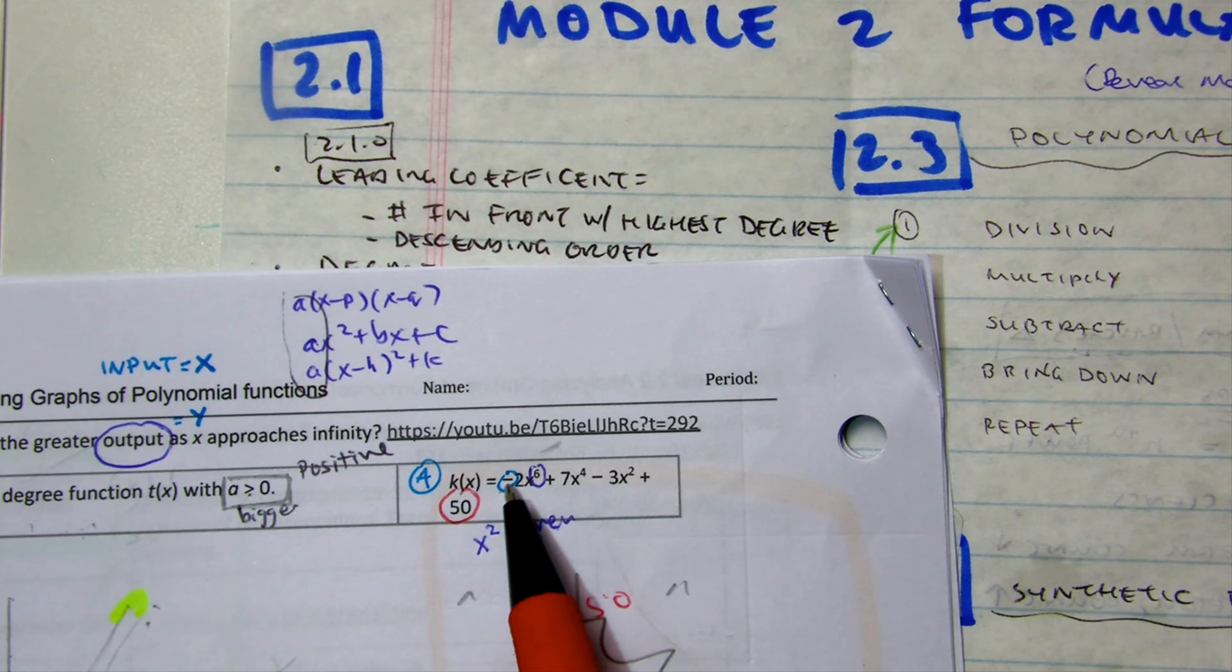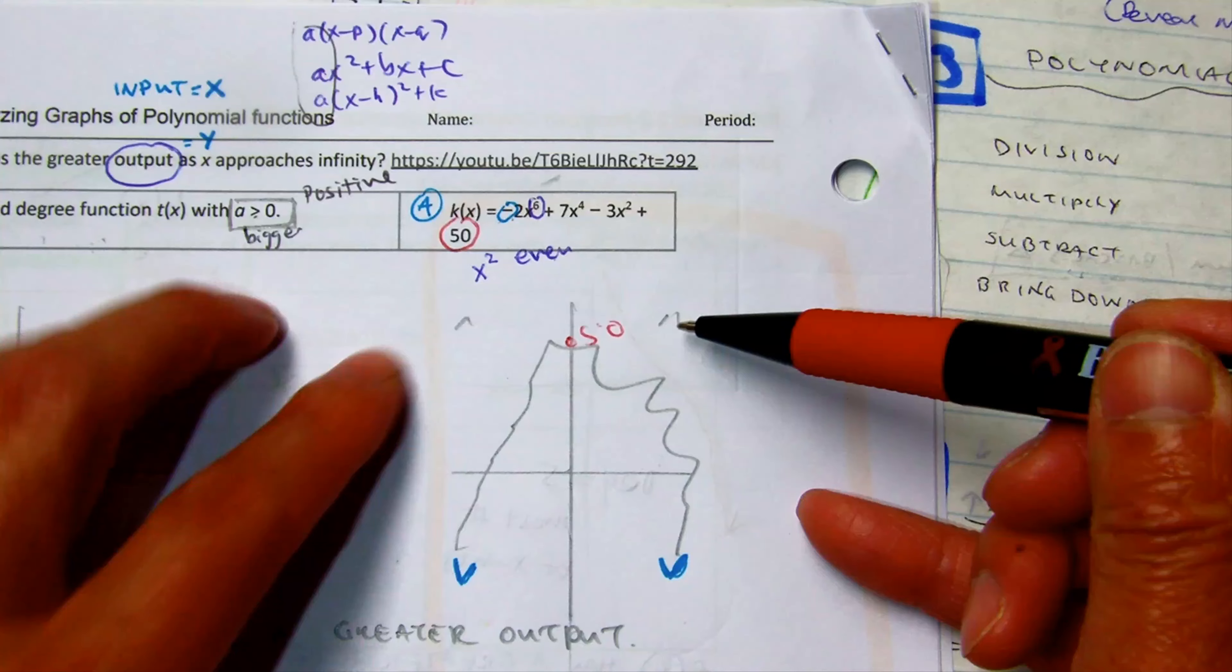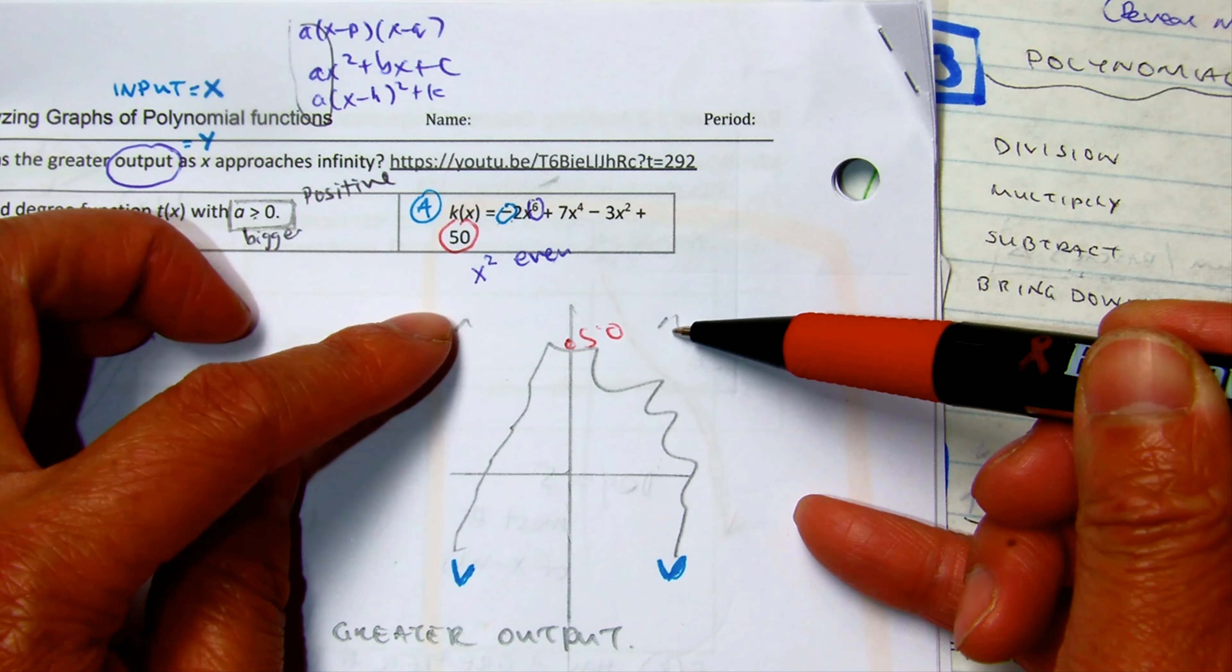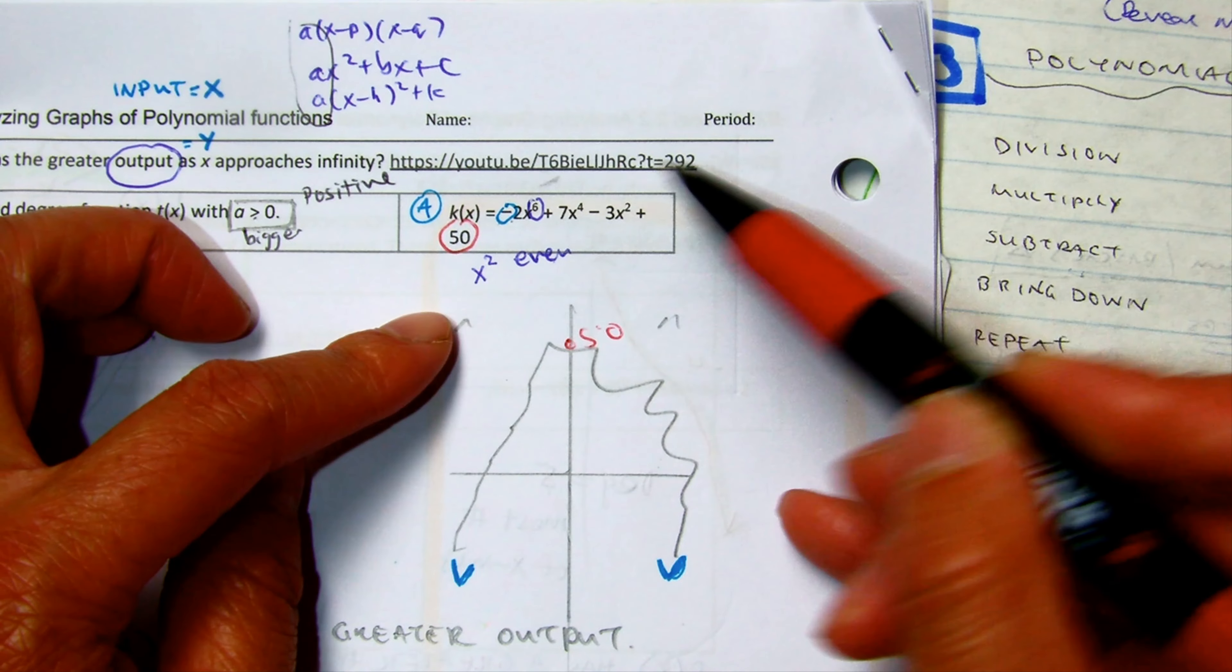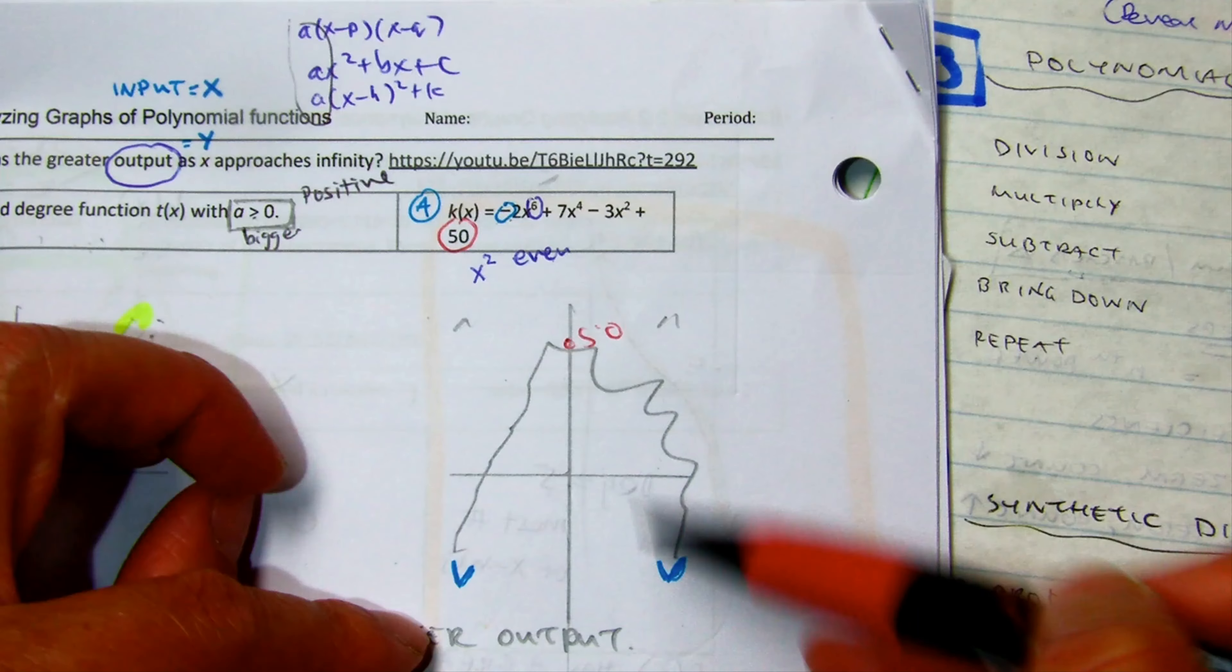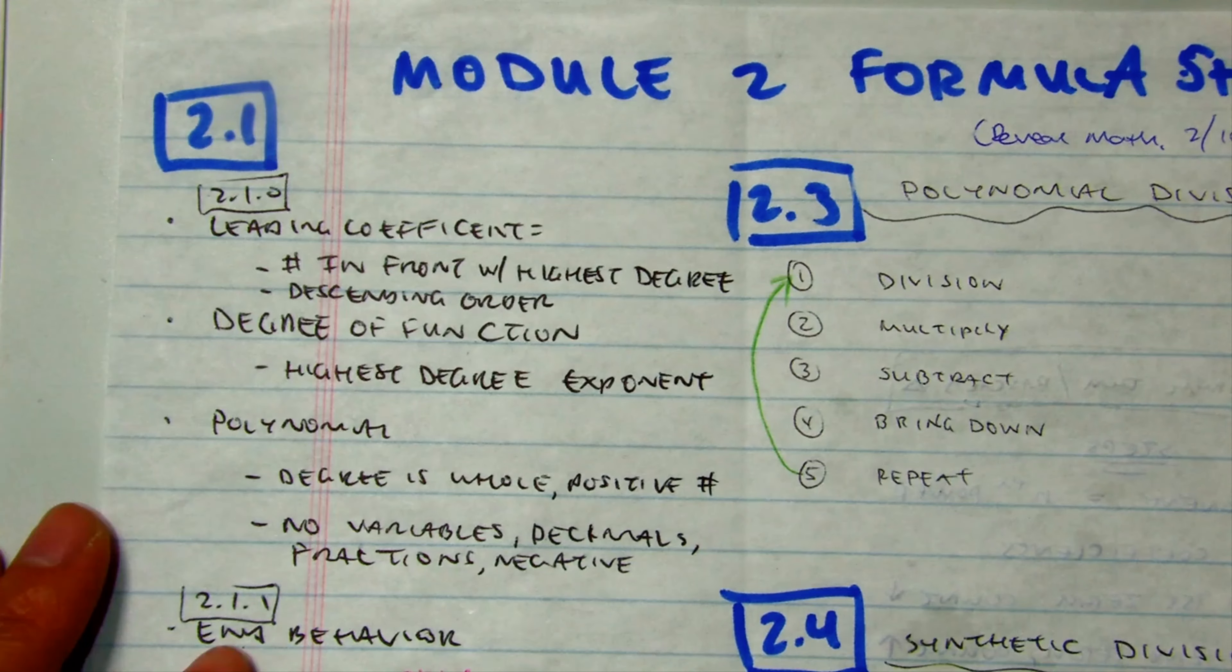Again, we learned in class that what the leading coefficient does is it might reflect it over the x-axis if it's an original like this. Like an even degree, it's going to flip it over.